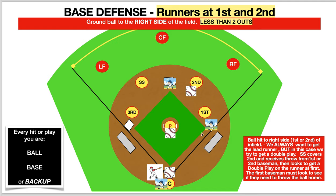So let's take a look at this again. We have a runner on first and a runner on second. In this scenario the ball is going to be hit to the second baseman on the right side of the field. The second baseman will be on ball — he's going to field the ball. Shortstop's on base. First is on base. Third covers base. The pitcher in this scenario, since we have a runner on second base, is going to have to come and backup third unless your coach wants that individual coming over and covering first base.